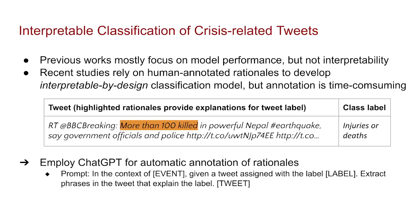There exist many works on tweet classification; however, most previous works only focus on model performance but not model interpretability. Some recent studies rely on human-annotated rationals to develop interpretable-by-design classification models that can classify tweets into different classes and extract rationals as supporting evidence for the output labels simultaneously. However, human-annotated rationals are not always available, especially for new-coming crisis events, and the annotation process is time-consuming.